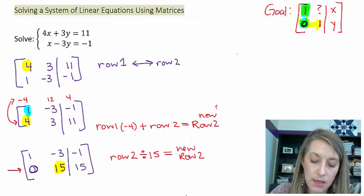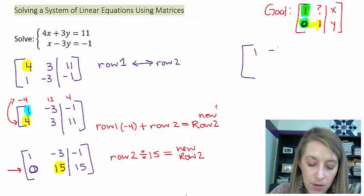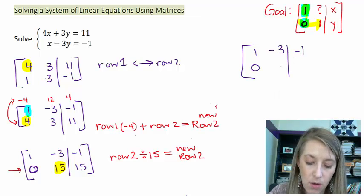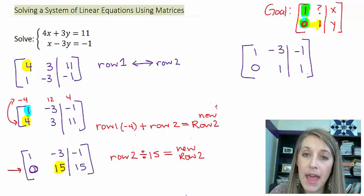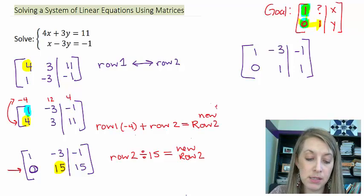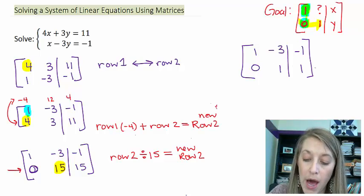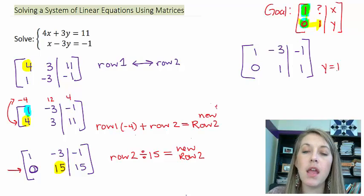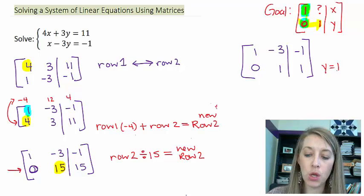And so that puts me over here with my row 1 exactly the same, and my row 2 is 0, 1, 1. And now I have it right where I want it, where I have 1s in my diagonal and I have a 0 below it. So this tells me what my answer for my y value is. This tells me that my y is equal to 1, if I would put this back into equation format.